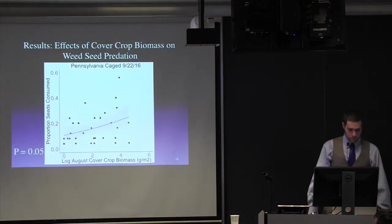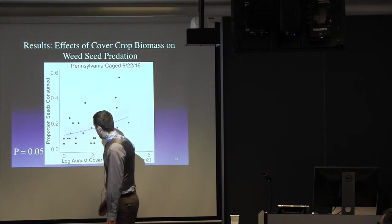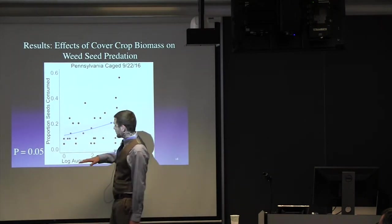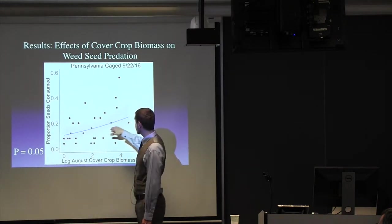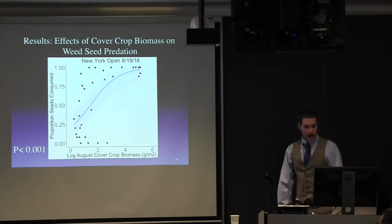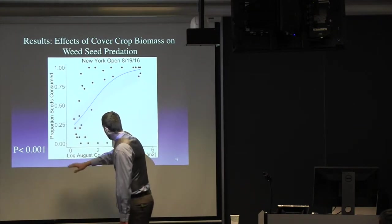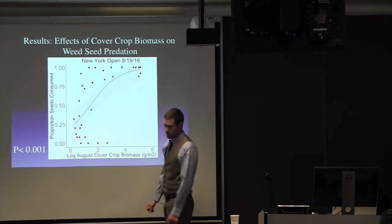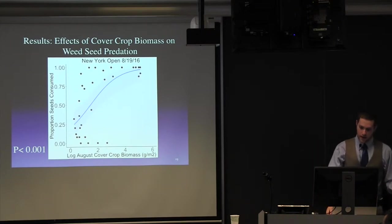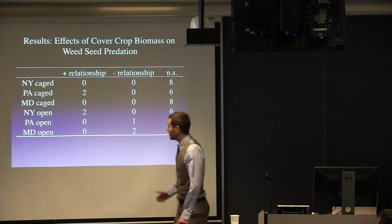And what did we see? So here's an example of a caged arena. So the proportion of seeds consumed on the y-axis and the log transformed cover crop biomass from August, grams per meter squared on the x-axis. And we, in fact, saw a positive relationship, which was great. Really exciting. And this was what we wanted to see. And in looking over at open arenas, we saw the same thing. So this is New York. In our first sampling date, proportion of seeds consumed, increase in cover crop biomass. And I would like to say that we found this in everything. But that would be an alternative fact. And in fact, there was a lot of nothing.